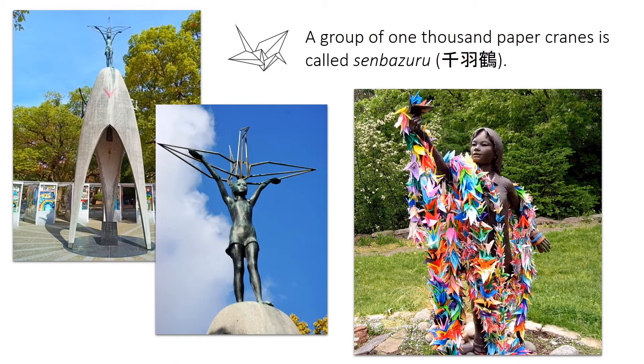A group of 1,000 paper cranes is called Senbazuru, and here on the left is a picture of the main statue in the Peace Park and another one on the right.